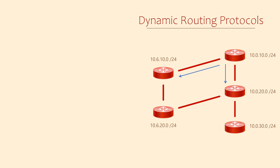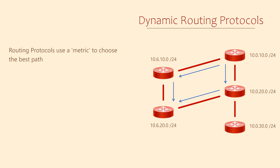What happens when a router learns the same route from two different places? In this example, a router is learning the 10.0.10.0 network from two different neighbours. In a case like this, the routing protocol selects the best path to the destination and that path goes into the routing table. The method it uses is a bit like spanning tree — each path will have a metric, a number that shows how long the path is. The routing protocol will see that one path has a lower metric than another; the lower the metric, the better the path. There are a few different routing protocols, and each has their own way of calculating the metric.